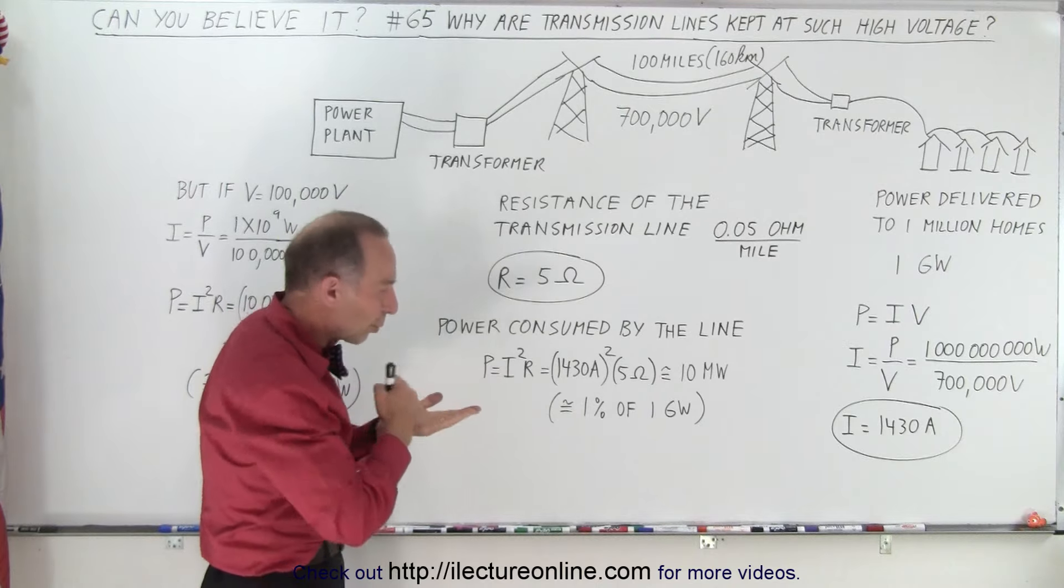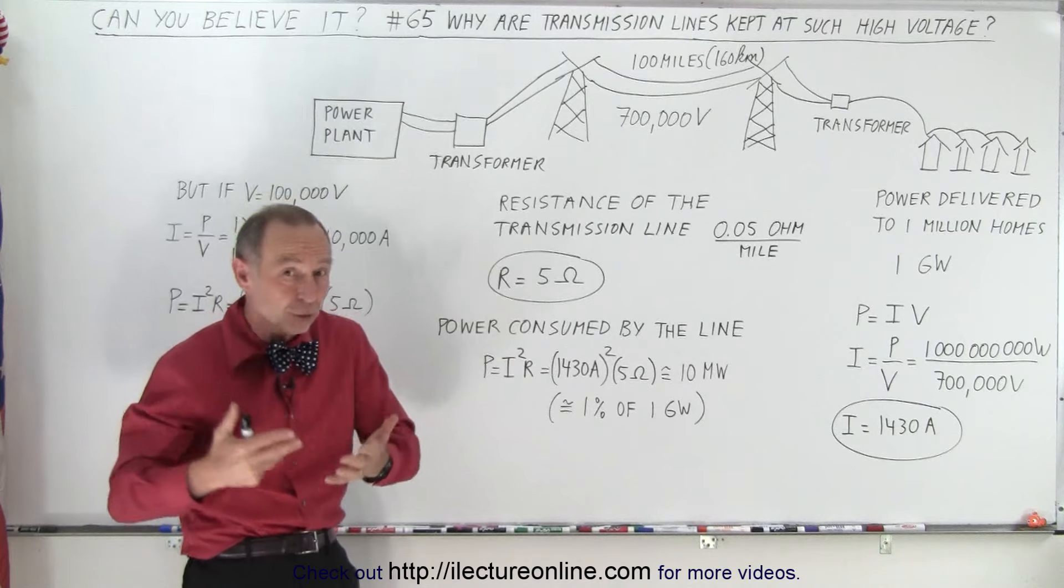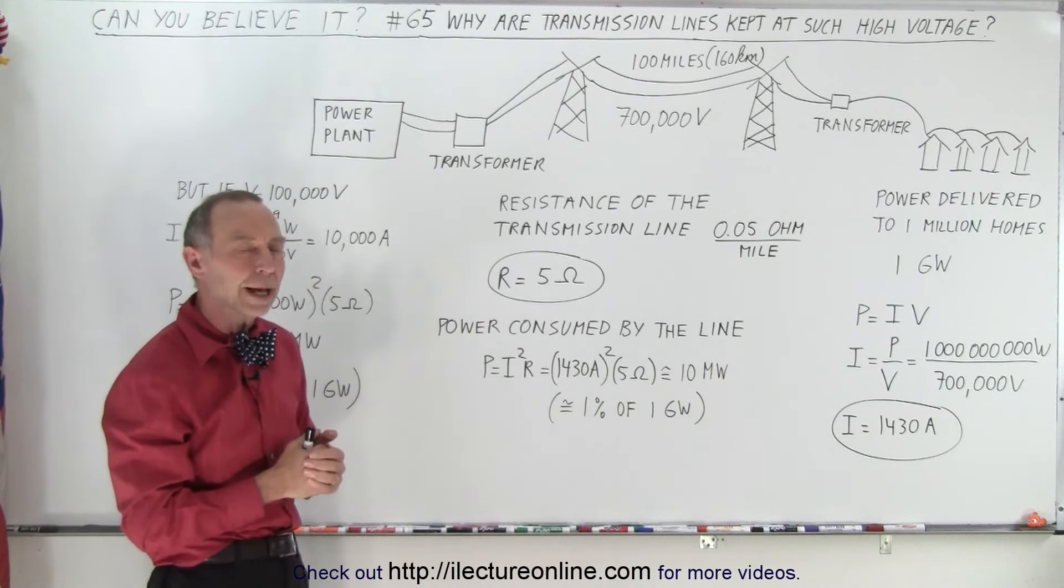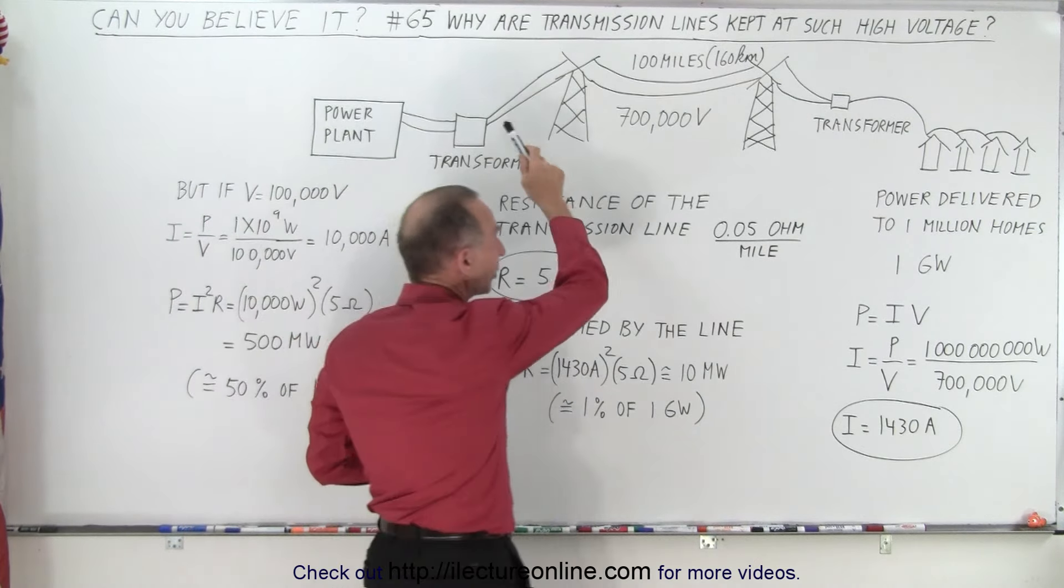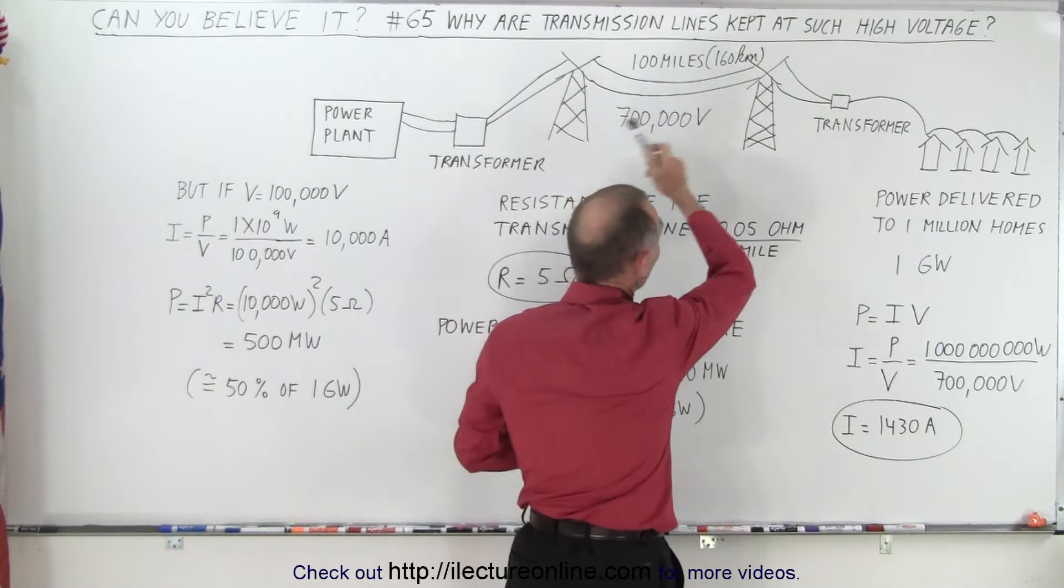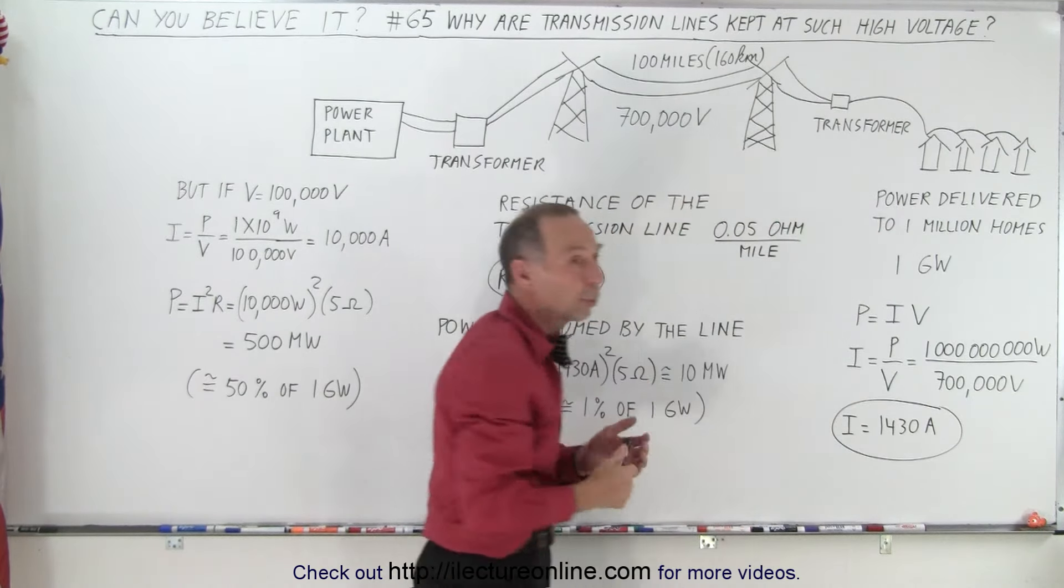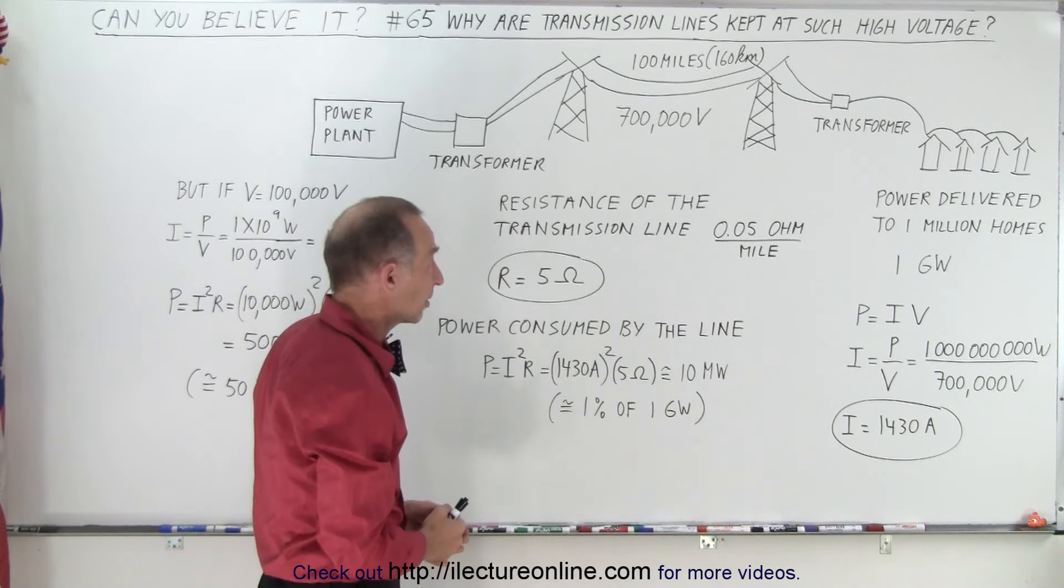So we have transformers that will step up the voltage to really high voltages, as much as 700,000 volts or more, in some cases over a million volts. So why do they do that? Well, let's try to explain that. They travel a long distance, let's say 100 miles along transmission lines, then they get stepped down with another transformer to a voltage level where the houses can then receive it and not get electrocuted coming anywhere near it.